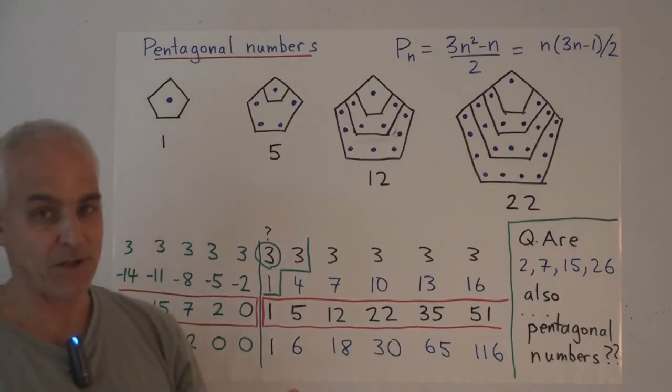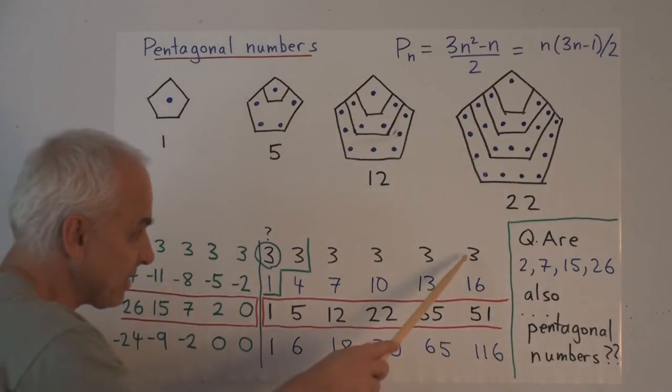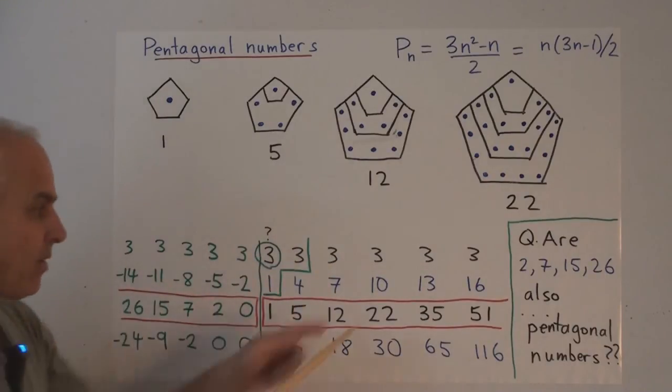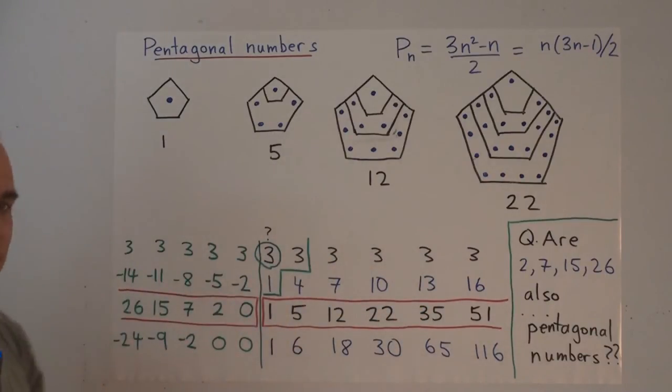Well, if we do, there's only really one reasonable way of doing it. Because this pattern of 3's obviously wants to continue. So we have to continue this pattern of 3's. Well, if this is a 3 and that's 4 that we know, then this has got to be 1.